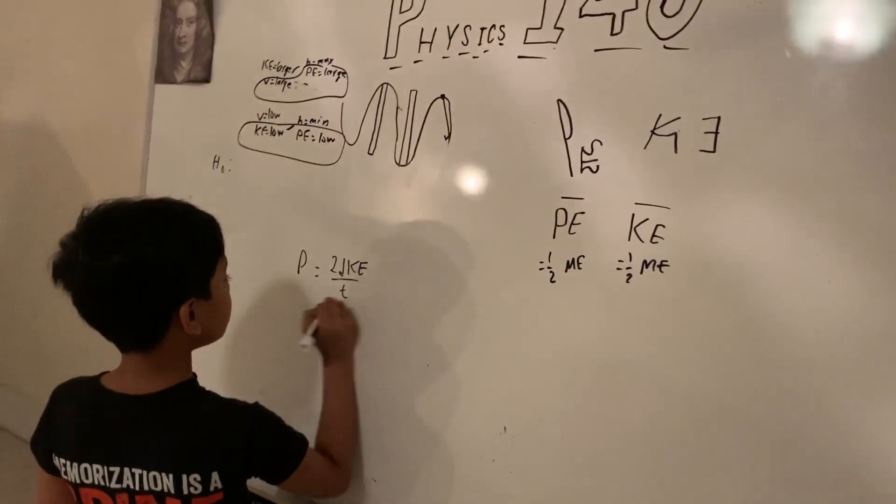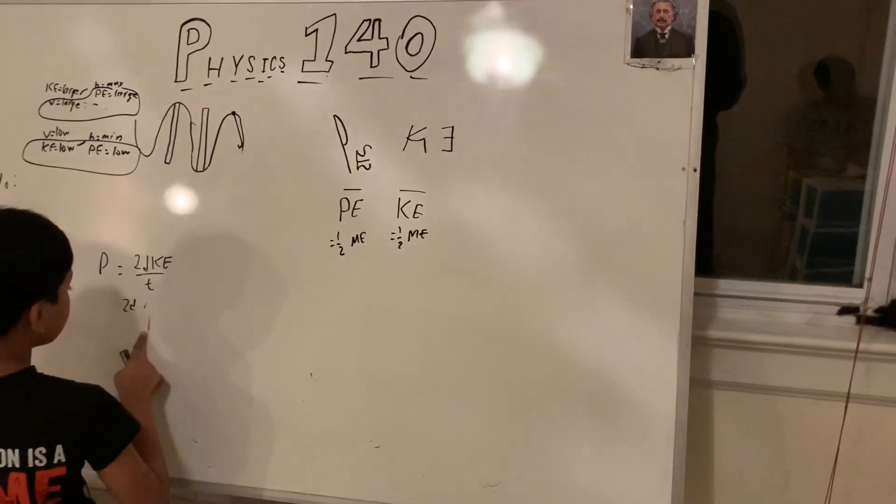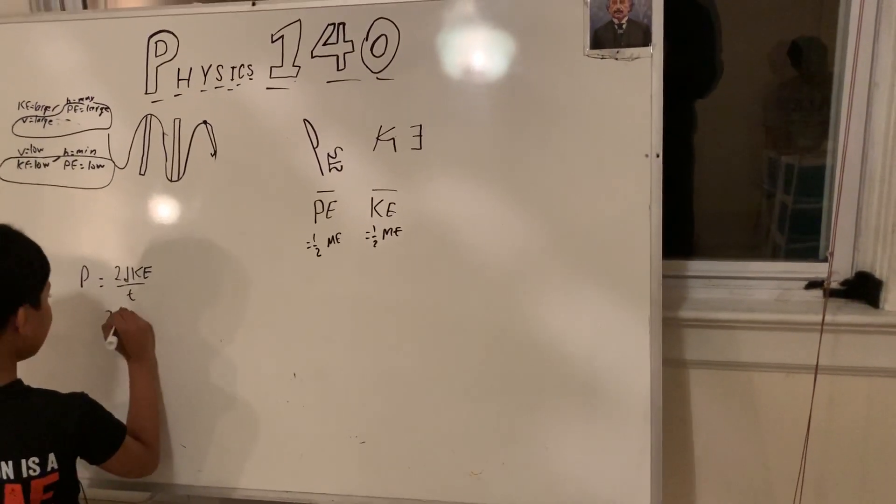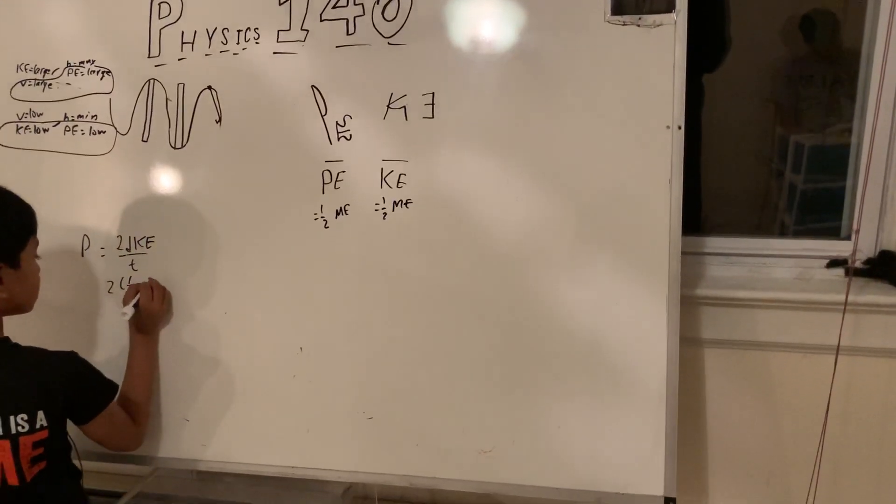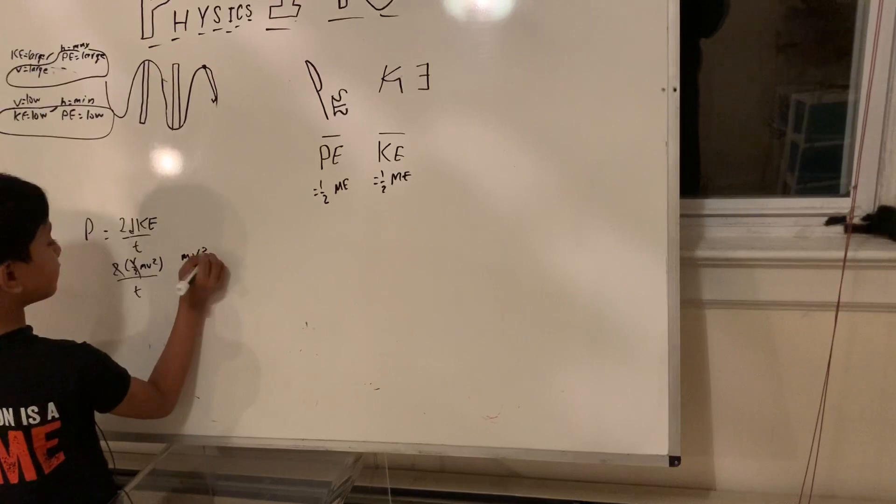Well, we know 2 times KE over T. KE is equal to half mv squared, okay, over T. These cancel out, giving us mv squared over T.